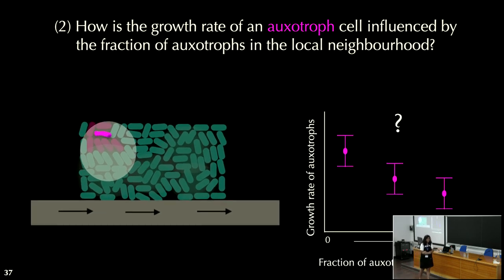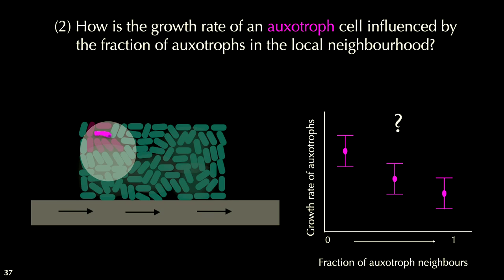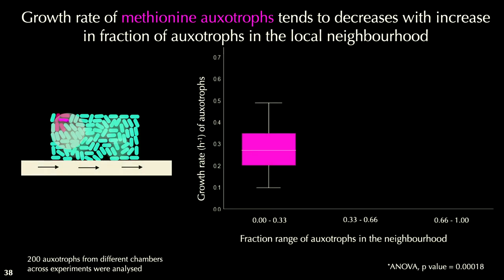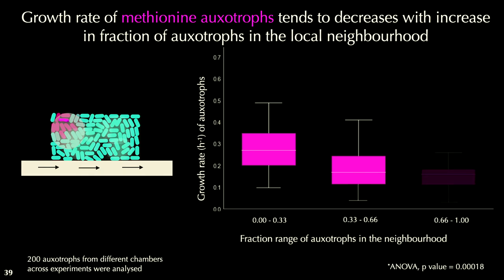Since the auxotroph is the taker and the wild type cell is the giver, one would expect that with increasing fraction of auxotroph neighbors, the growth rate of the auxotroph decreases. And this is exactly what we observed. I look at the growth rate of the auxotroph cell, and if the local microenvironment has less than 33% auxotrophs it goes in the first bin, between 33–66% in the second bin, and more than 66% in the third bin. With increase in fraction of auxotrophs in that neighborhood, the growth rate of the auxotroph decreases.